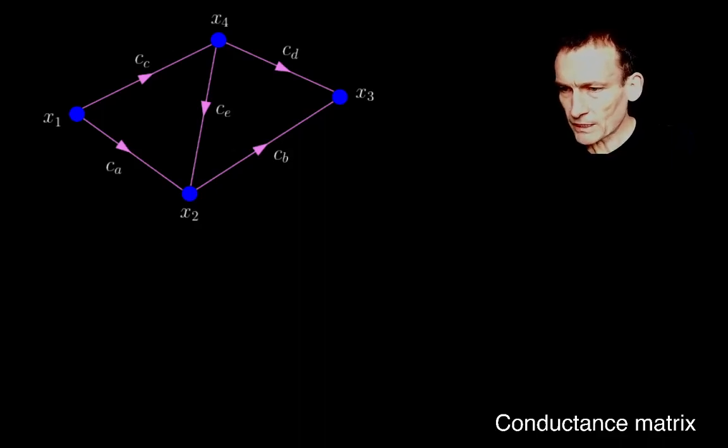So here's the graph that we've been considering all along. And what I've done now is I've actually labelled, if you like, just by the side of them to indicate that the conductances are all different now. CA, CB, CCE, CD, CE.